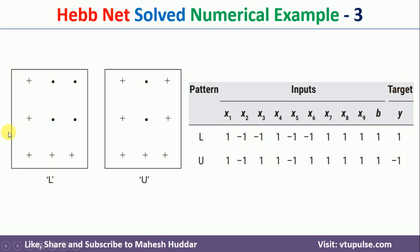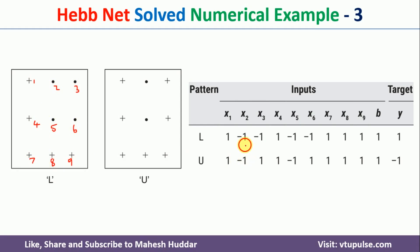First we convert pattern L into numbers. Wherever there is a plus we use 1, and wherever there is a dot we use -1. Counting positions 1 through 9, positions 2, 3, 5, and 6 are -1 and the remaining are +1. So x2, x3, x5, and x6 are -1; all others are +1. Bias is 1. Pattern L is assigned class y = 1 and pattern U is assigned class y = -1.